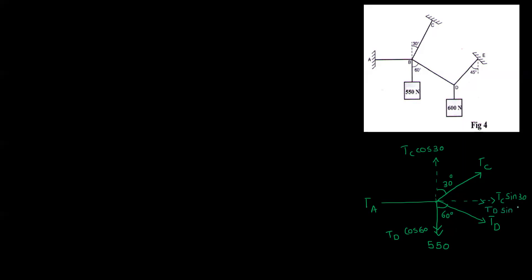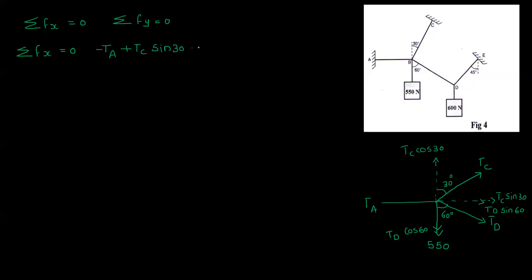TAD sin 60. Now, sum of Fx is equal to 0, and sum of Fy is equal to 0. Writing down the x-direction: TC sin 30 plus TD sin 60 equal to 0.